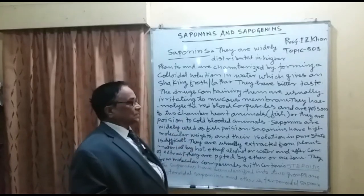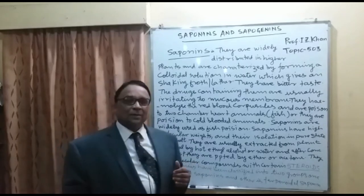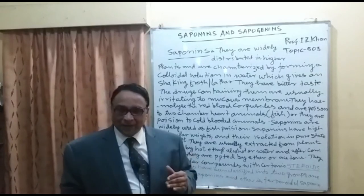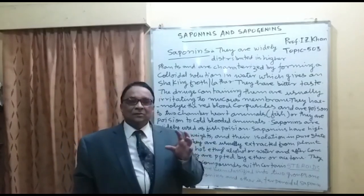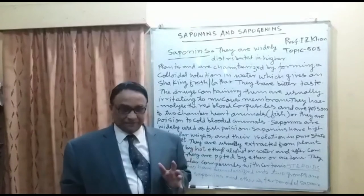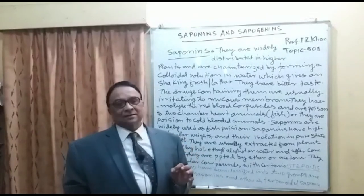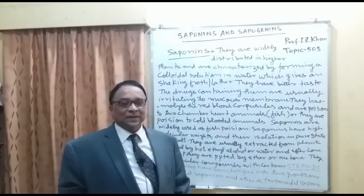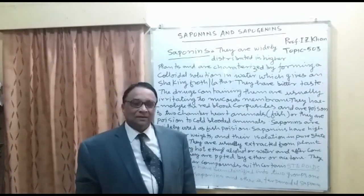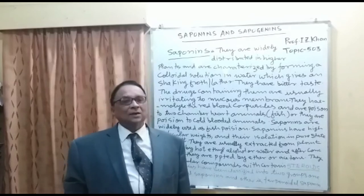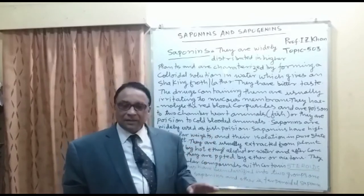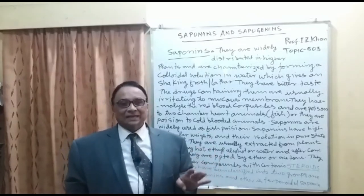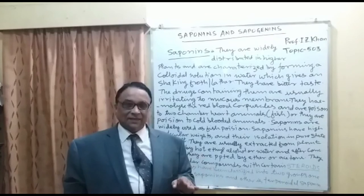They can hemolyze the red blood corpuscles. The hemolysis of red blood takes place in cold-blooded animals — those animals which have a two-chamber heart, like fish. So it is a deadly poison for fish. Of course, it is also toxic to human beings because we have a four-chamber heart and we are warm-blooded.